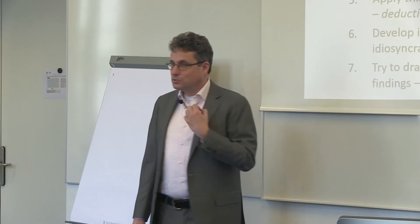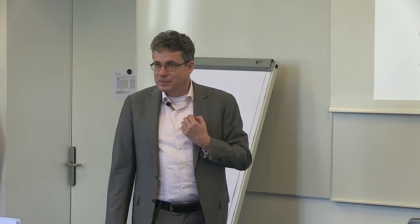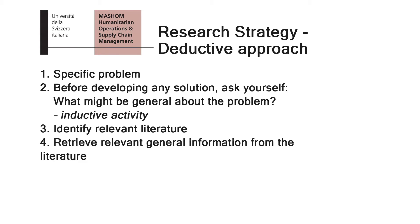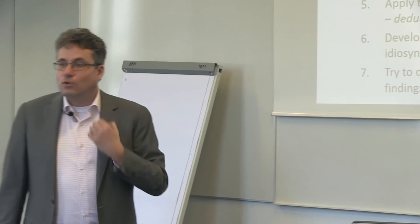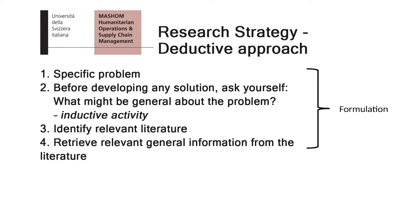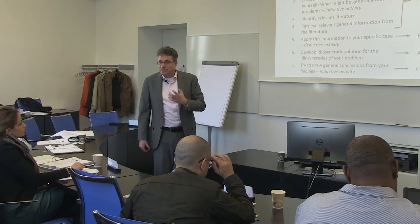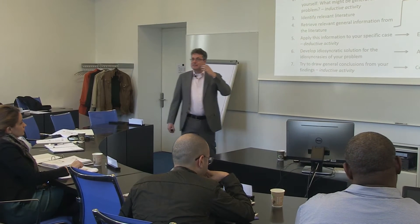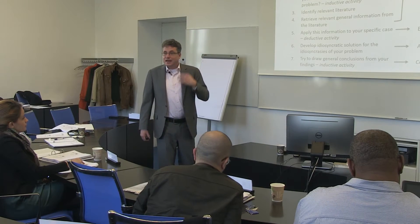The next step is to identify the relevant literature. When you ask yourself what is general about your specific research question, you are also looking at certain keywords for the literature. You then retrieve the general information from the literature and use this information to formulate your hypothesis — to deduce these hypotheses. This is the formulation phase. Then you apply this information to your specific case, looking for data in which the hypothesis you have formulated can be used and tested.